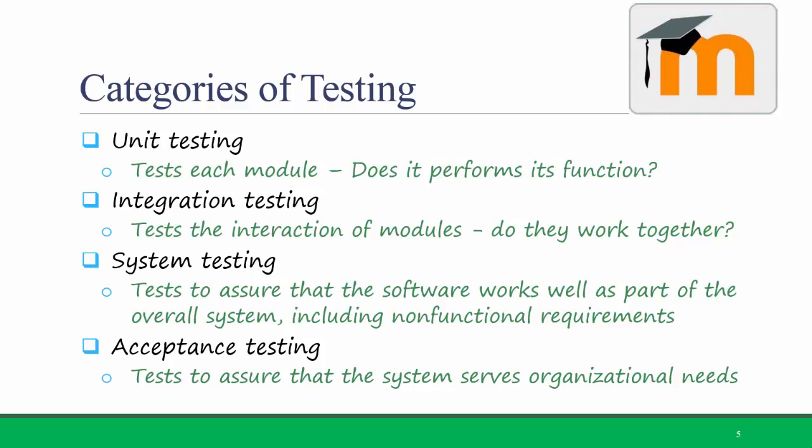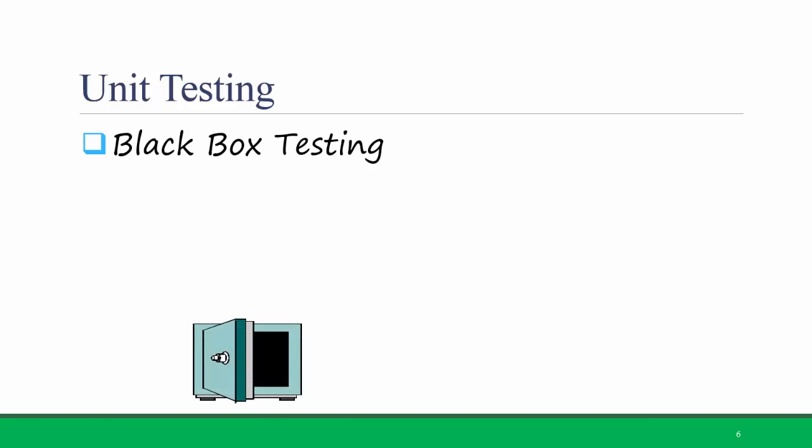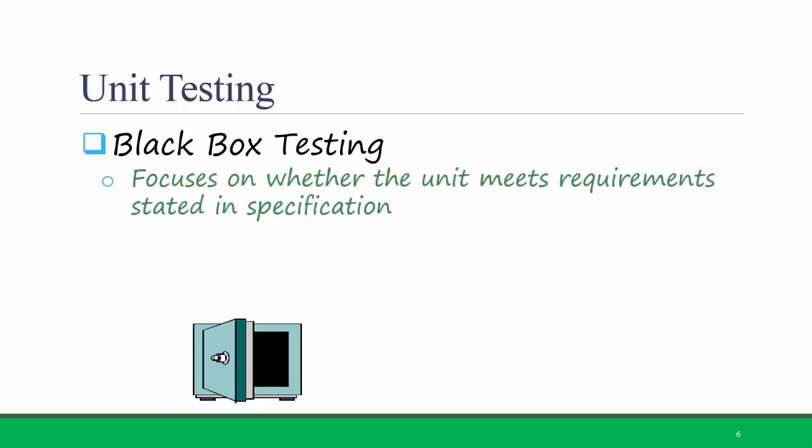Let's talk about some of these in more detail. First is unit testing. There are two types of unit testing. Black box testing, which focuses on whether the unit actually meets the requirements stated in the specification. So in our example of Titanium, we check to see if the assignment module works by seeing if we can create an assignment and distribute it to students.